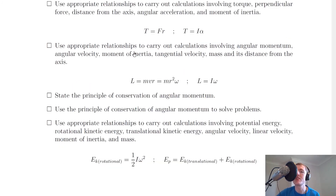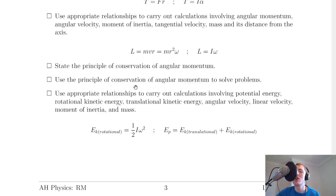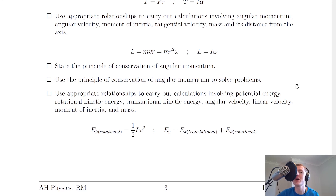You also need to use appropriate relationships for calculations involving angular momentum, angular velocity, moment of inertia, tangential velocity, mass and distance from the axis of rotation. For a point mass use L equals mvr equals mr squared omega, depending on whether you have linear velocity v or angular velocity omega. For a rigid body use L equals i omega. Next, state the principle of conservation of angular momentum: the angular momentum before an interaction equals the angular momentum after, providing there are no external torques acting. You should be able to use this principle to solve problems by setting i omega before equal to i omega after.